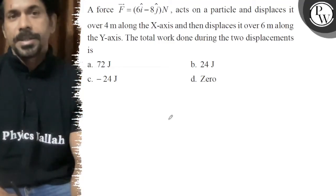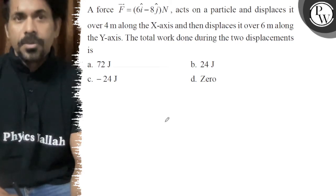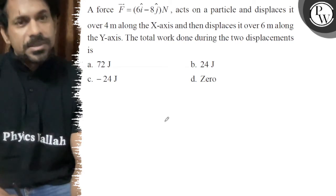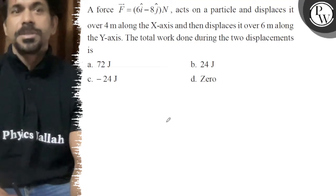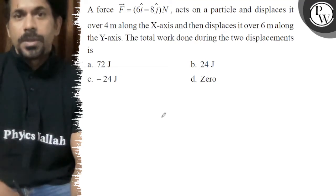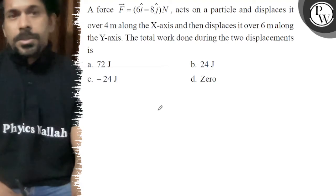Hello, let's see the question. A force F = (6î - 8ĵ)N acts on a particle and displaces it over 4 meters along the x-axis and then displaces it over 6 meters along the y-axis. The total work done during the two displacements is...